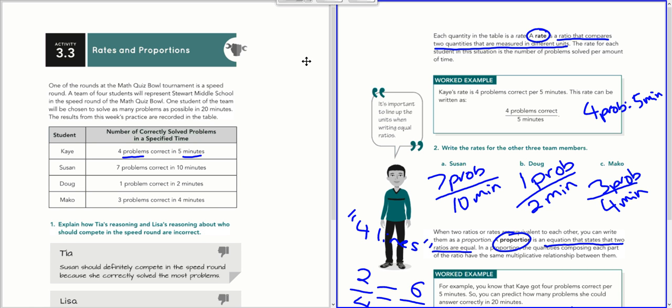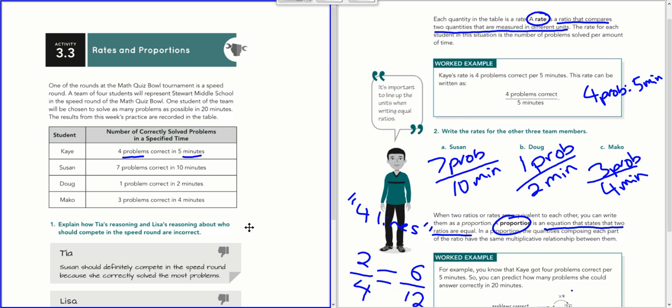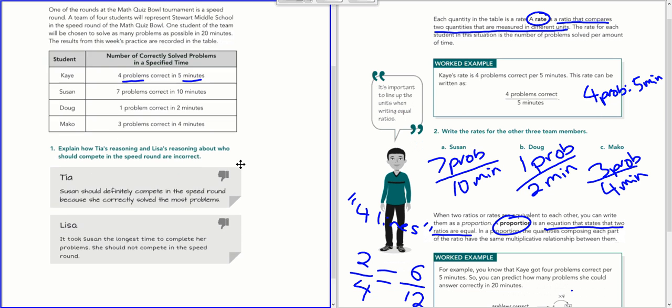Welcome to the video on rates and proportions. This also covers scaling up and scaling down in order to find equivalent ratios. We start with a situation about a scholar's bowl or quiz bowl, where different students answer a different number of problems in a certain amount of time.